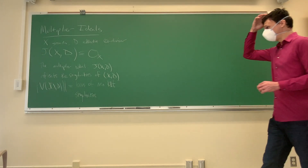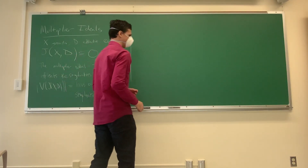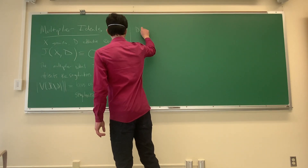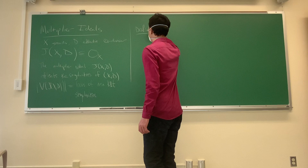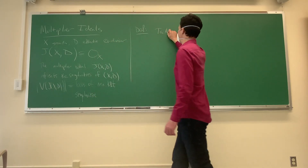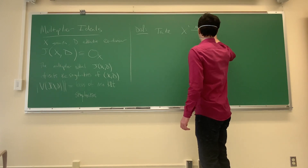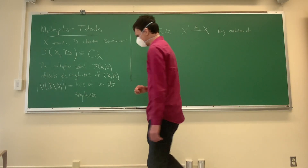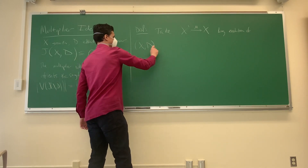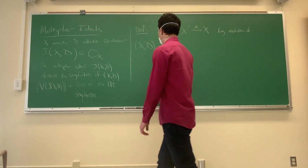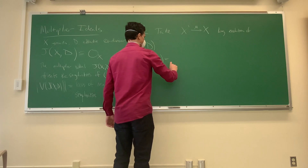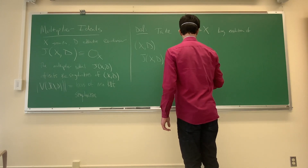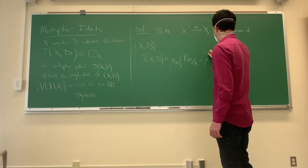So what is the definition? We'll give the definition and then do some examples — the examples are really what make this work. Given X and D, we take a log resolution μ: X' → X of X with its divisor D.